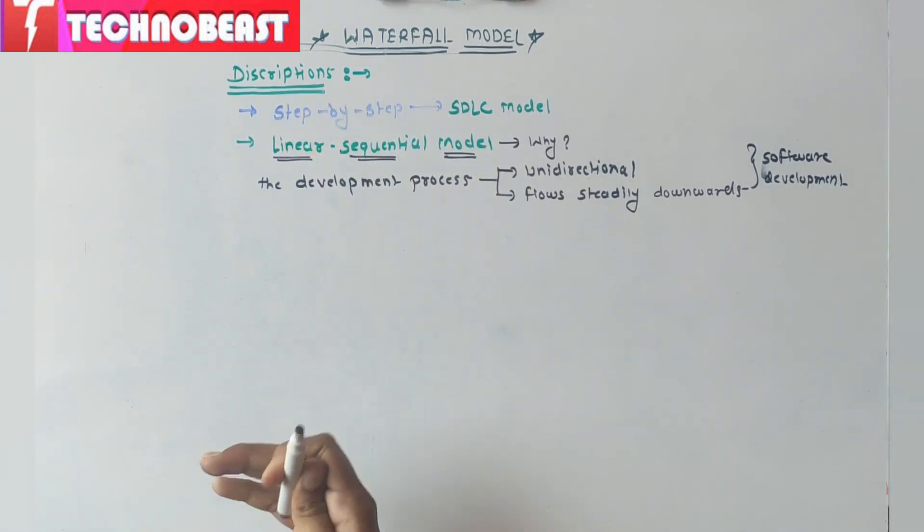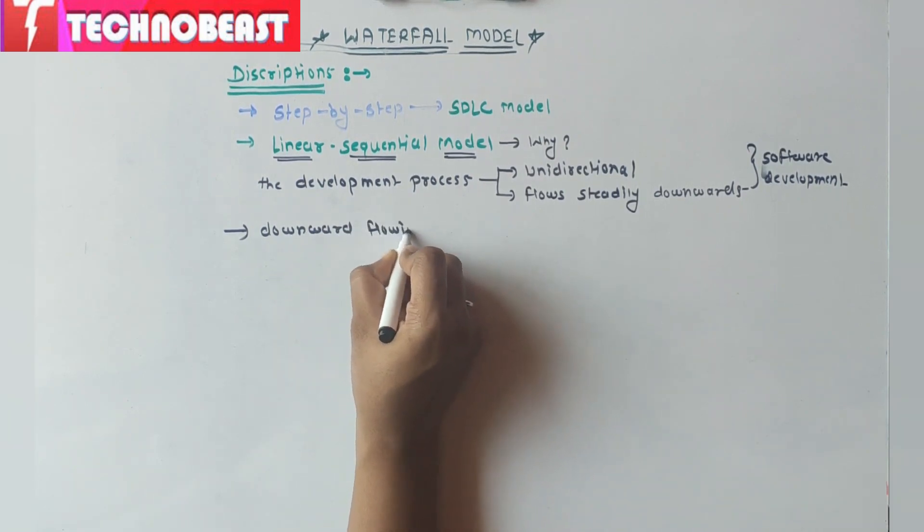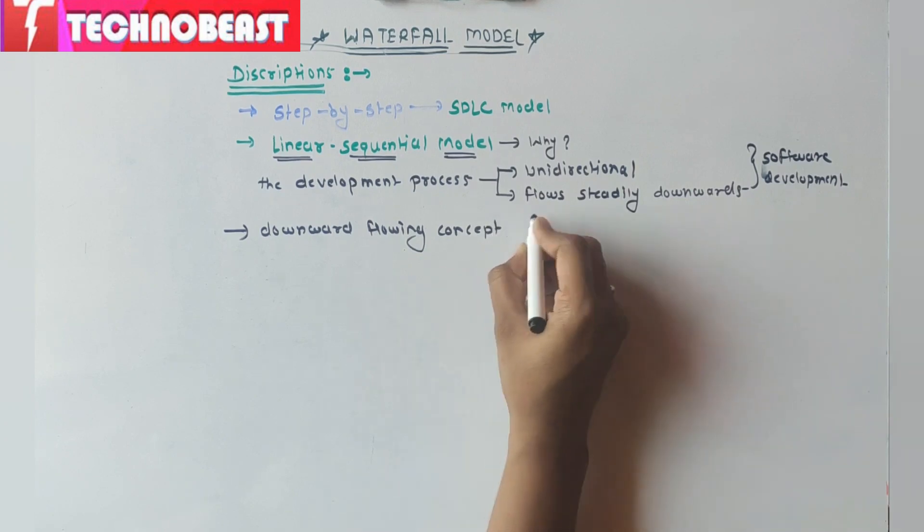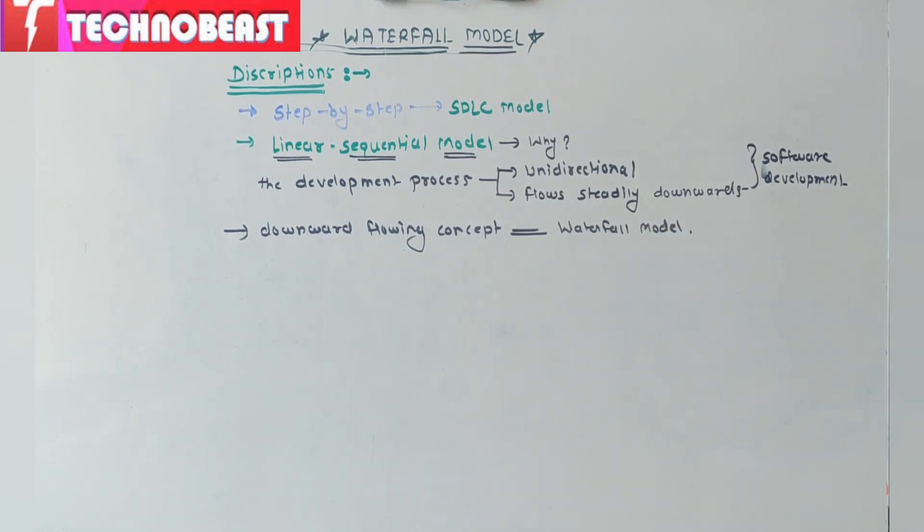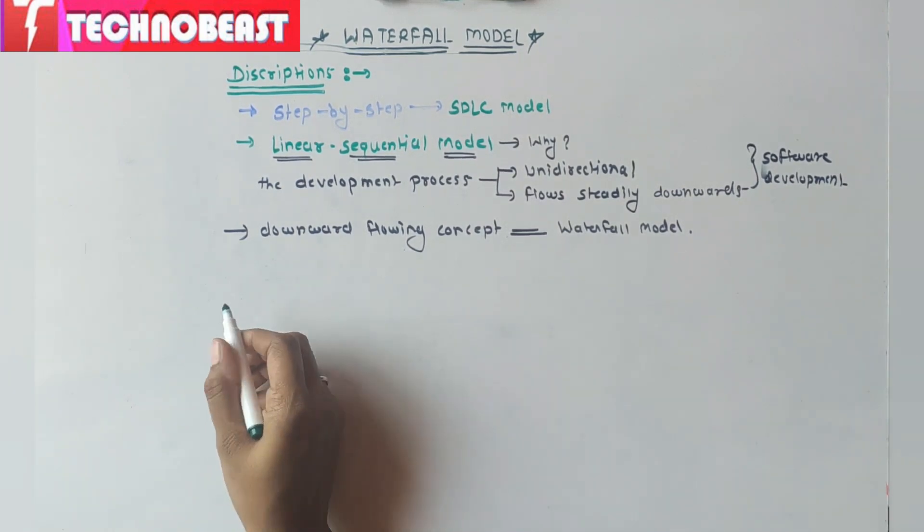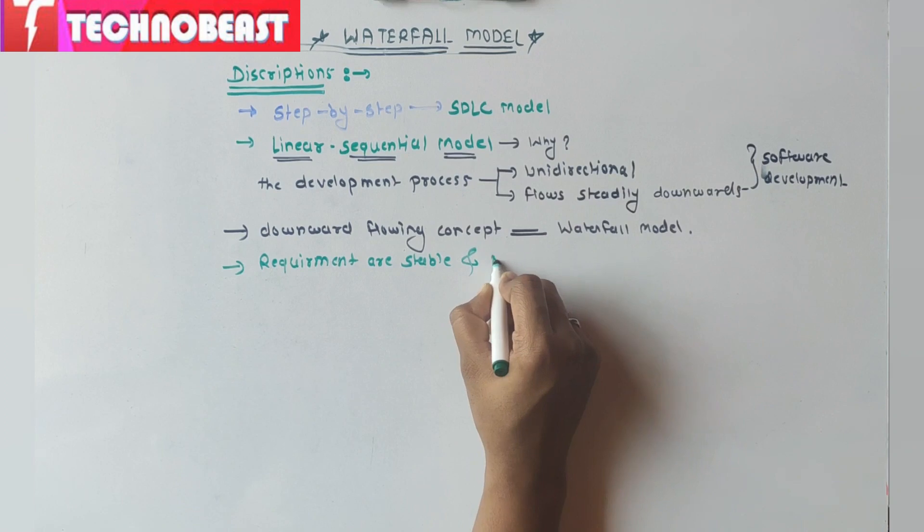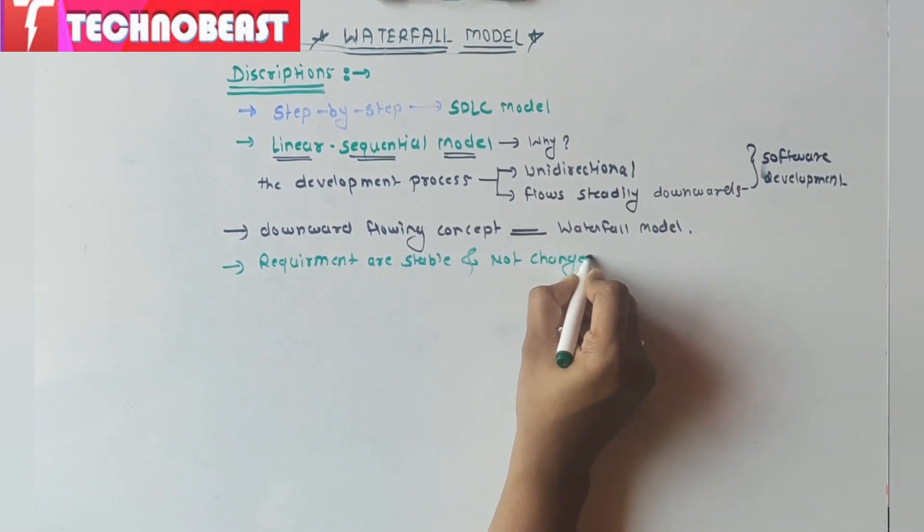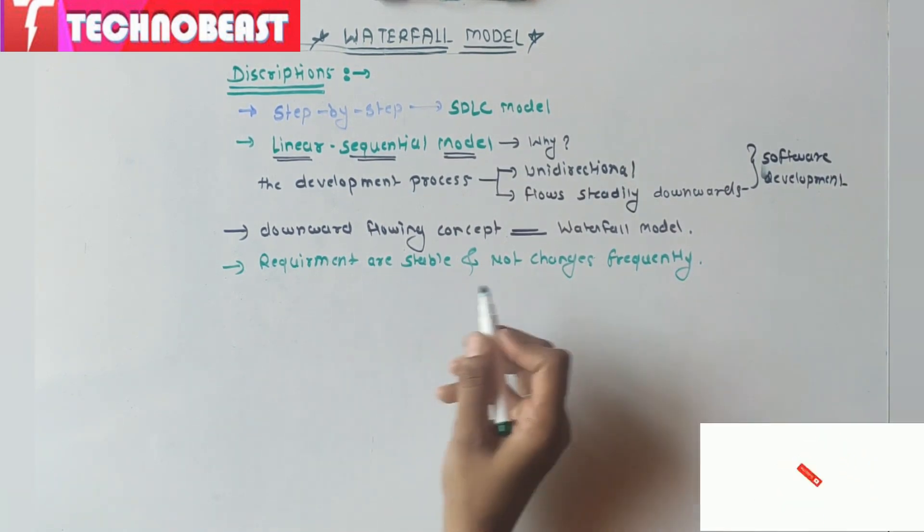This downward flowing concept we call as a waterfall model. Waterfall model is totally working on downward flowing concept. This waterfall model is used when requirements are stable and not change frequently.